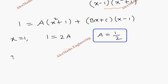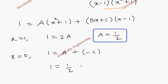Now let x equal 0. So 1 equals A plus the second part: Bx becomes 0, so only C remains, and x minus 1 gives minus 1, so we get A minus C. We know A equals one half. After substituting, minus C equals 1 minus one half, so C equals minus one half.